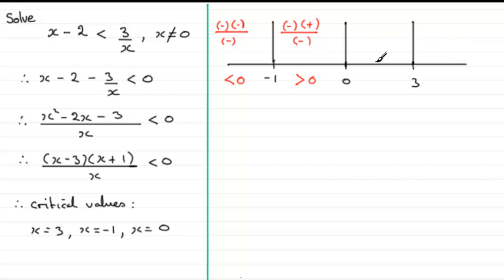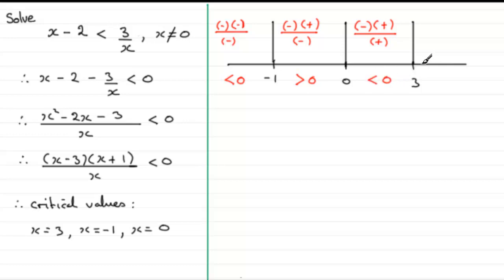Take a value of x between 0 and 3, say x equals 1. The first bracket is negative, the second bracket is positive, and x in the denominator is positive. Negative times positive is negative, divided by positive is negative — less than zero. Finally, take any value greater than 3: both brackets are positive, x is positive, so positive over positive is positive — greater than zero.